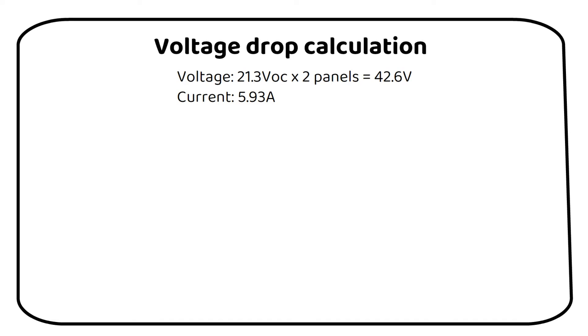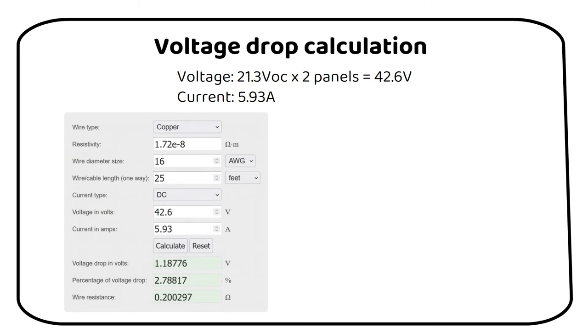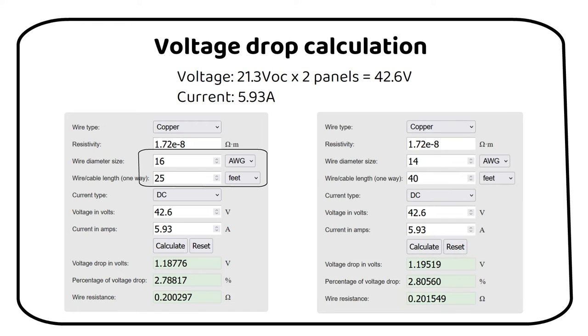Now we have everything we need to calculate the voltage drop, except the distance to the charge controller. I will calculate two wire lengths, one 25 feet and one 40 feet. As a rule you must keep the total voltage drop under 3%.